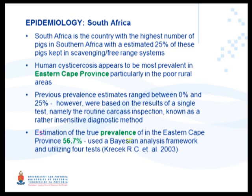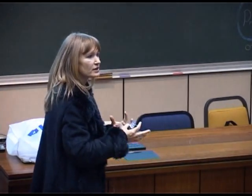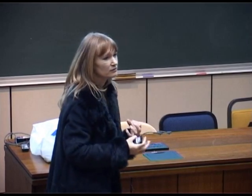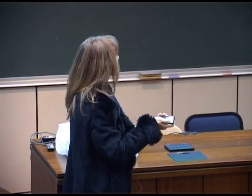The situation in South Africa: at least 25 percent of pigs being reared in South Africa are free range. The problem seems more prevalent in the Eastern Cape province, though that could also be because most studies have been done there. A recent article by Kreshek et al. estimated the prevalence using Bayesian methods at 56.7 percent. There are very large discrepancies in prevalence figures being reported, and the higher figures tend to be more credible than those saying less than 10 percent.